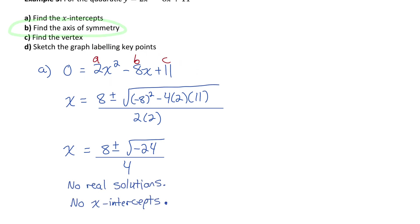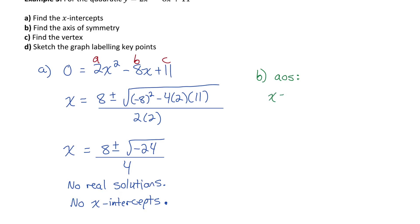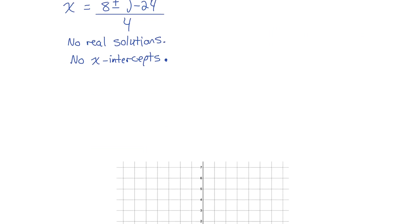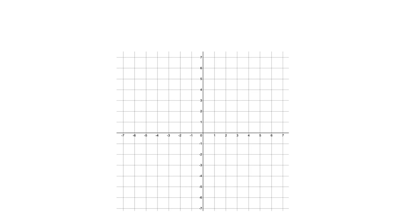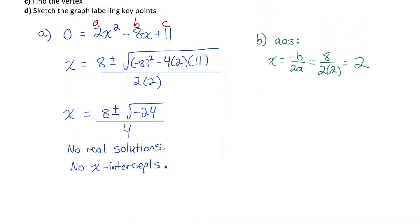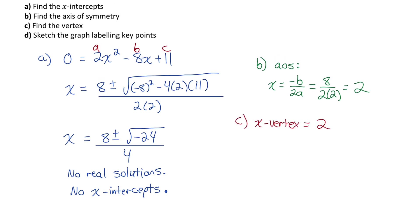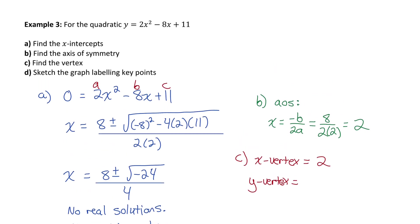For part b, finding the axis of symmetry: since we have no x-intercepts to average, we use the formula x equals negative b over 2a. Negative negative 8 is 8, divided by 2 times a equals 2, giving 8 over 4, which equals 2. So the axis of symmetry is at x equals 2, and I draw that vertical line on the graph. The vertex lies on this axis of symmetry, so its x-coordinate is 2.